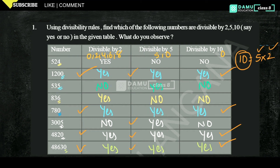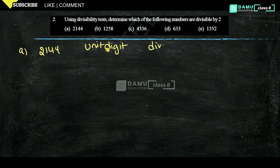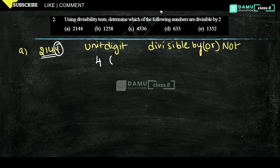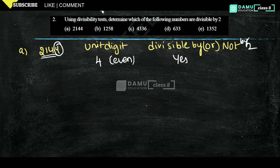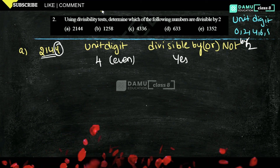Our next question: using the divisibility test, determine which of the following numbers are divisible by 2. The divisibility rule of 2 is that the unit digit should be 0, 2, 4, 6, or 8 — it should end with any of those. Our first number is 2144. The unit digit is 4, which is even, so yes, it is divisible by 2.